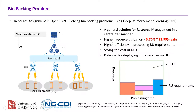The advantage of doing this is we will have higher resource utilization. For example, in our experiment we reached a gain of 5% to 12% in resource utilization. We will also have higher efficiency in processing RU requirements in this centralized way. By saving cost of the DUs, potentially we can deploy more services on DUs rather than just processing the RU requirements.